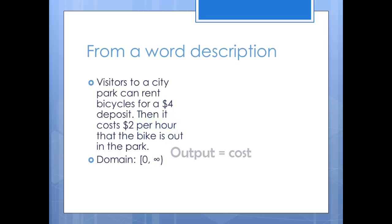Now think about the range. That would be the cost of renting the bike. Do negative numbers make sense here? No. You wouldn't pay a negative amount of money. Also, can you pay nothing? Again, no. The minimum payment is the $4 deposit. So the range would be anything from $4 and up.